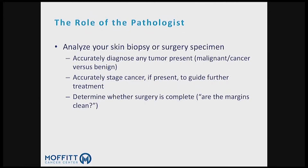So what does the pathologist do? We analyze the skin biopsy specimen. We've got to get the diagnosis right — tell you whether it's cancer or whether it's not cancer. If cancer is present, we accurately stage it so the surgeon and team knows what to do. And then at definitive surgery, we determine whether it was complete, accurately stage it again, and decide whether all the margins are clear.